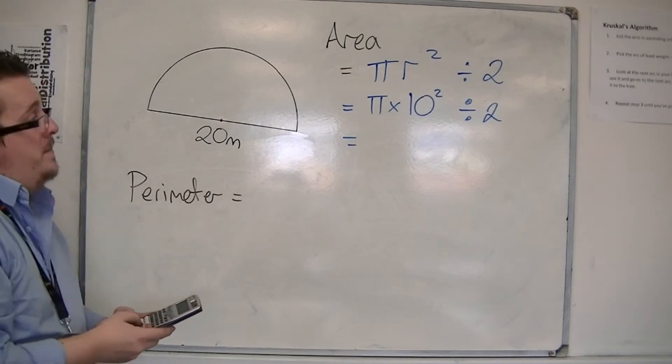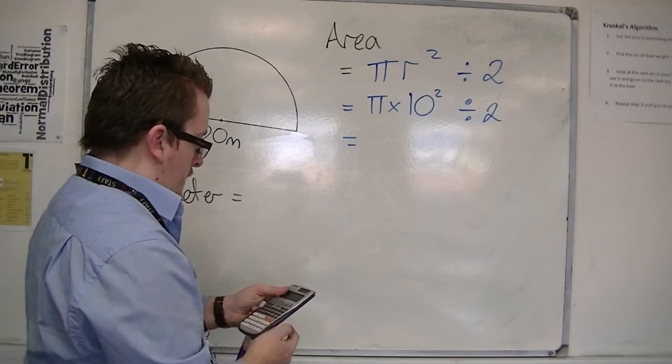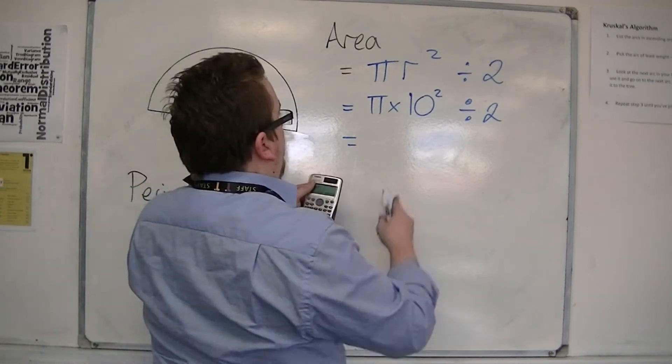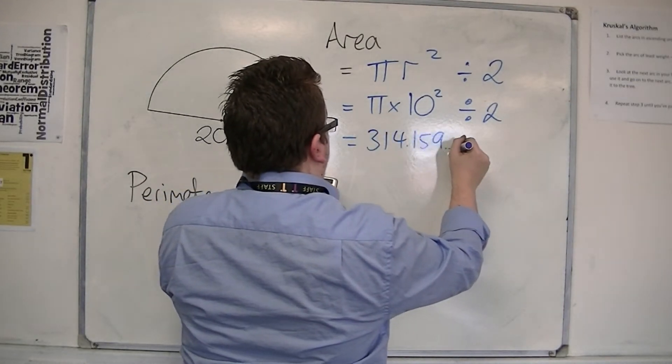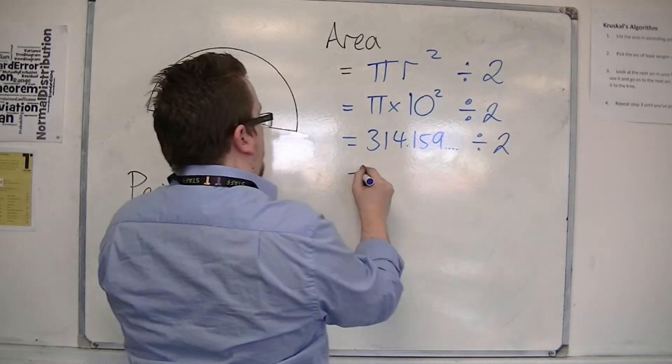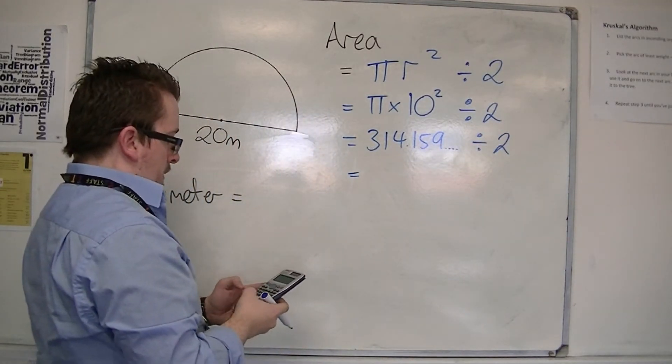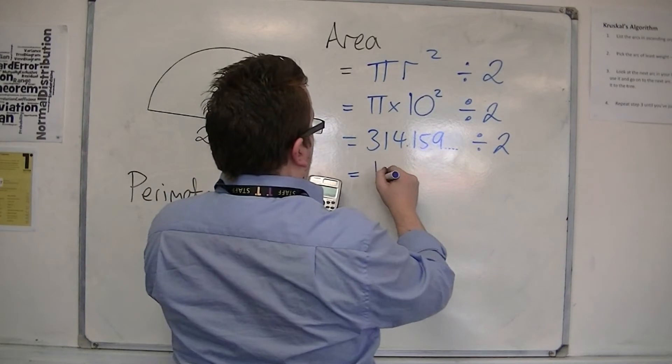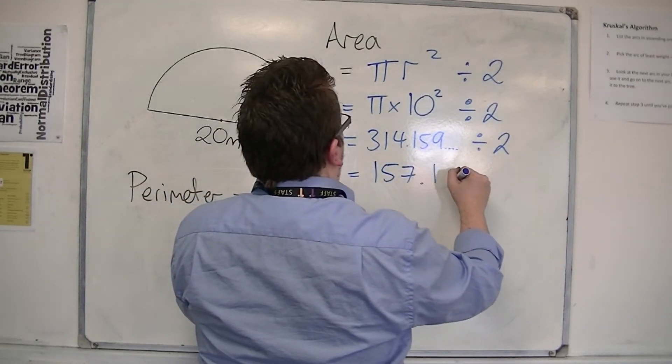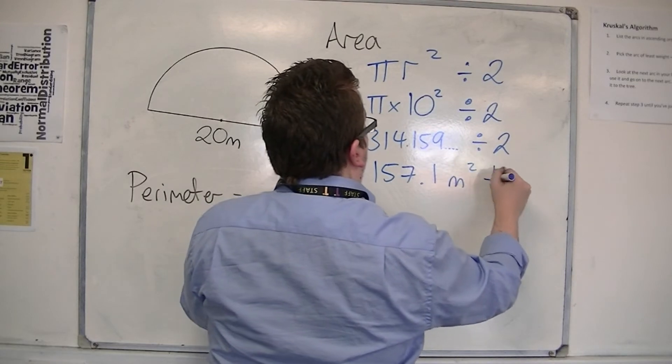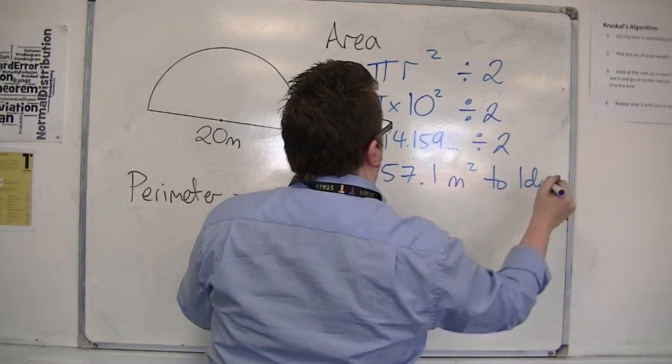Pi times 10 squared is 314.159... Divide that by 2, and you get 157.1 metres squared to one decimal place.